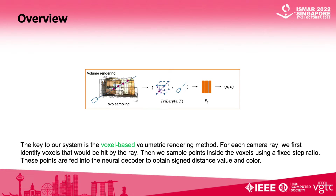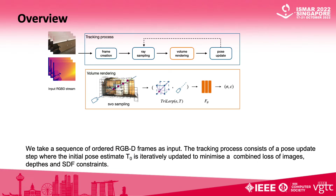The key to our system is the voxel-based volumetric rendering method. For each camera ray, we first identify voxels that would be hit by the ray. Then we sample points inside the voxels using a fixed step ratio. These points are fed into the neural decoder to obtain signed distance value and color.